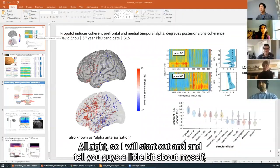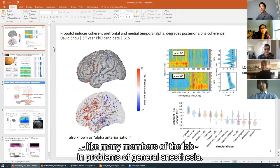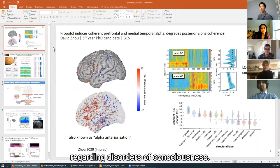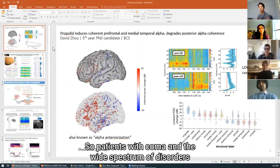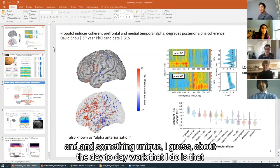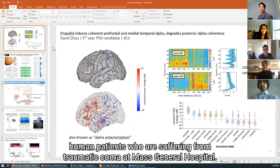I will start out and tell you guys a little bit about myself. I'm a fifth year PhD candidate in the lab, and I work on data analysis in problems of, like many members of the lab, in problems of general anesthesia. And I also work on problems regarding disorders of consciousness. So patients with coma and the wide spectrum of disorders emerging from coma. So something fun about me is I have a dog. And something unique about the day to day work that I do is that my work also requires data acquisition from human subjects and actually human patients who are suffering from traumatic coma at Mass General Hospital.